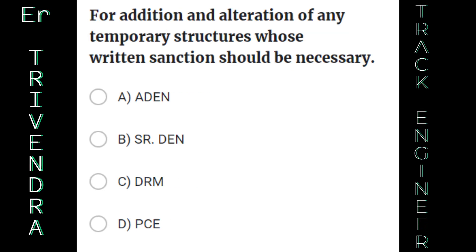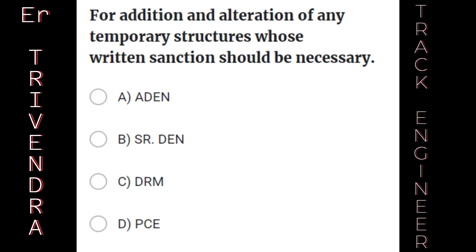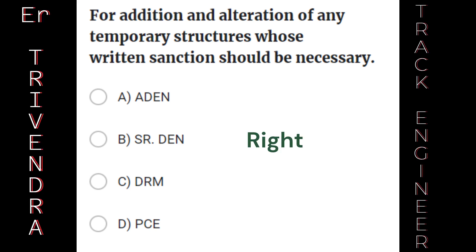For addition and alteration of any temporary structures, whose written sanction should be necessary? A. AEN. B. Senior Divisional Engineer. C. Divisional Railway Manager. D. Principal Chief Engineer. The right answer is: Senior Divisional Engineer.